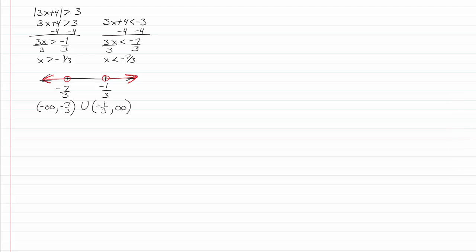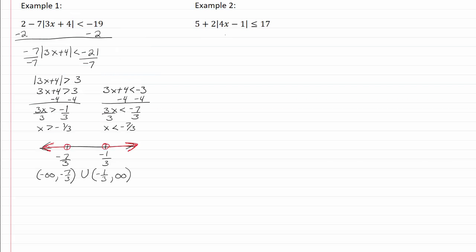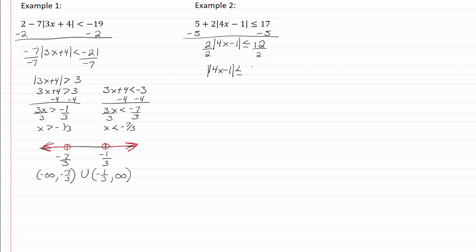Let's take a look at our second example. Again, we need to isolate our absolute value, so we're going to subtract five from both sides. We now have two times the absolute value of four x minus one less than or equal to twelve; divide by two, so now we have the absolute value of four x minus one less than or equal to six. We did not divide by a negative, so we do not have to change the direction of our inequality. Our two equations then are going to be four x minus one is less than or equal to six, and four x minus one is greater than or equal to negative six.